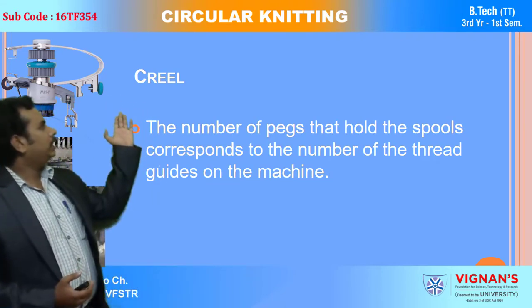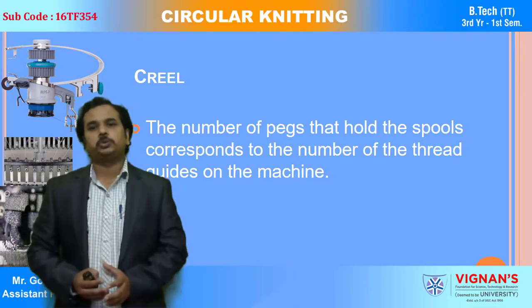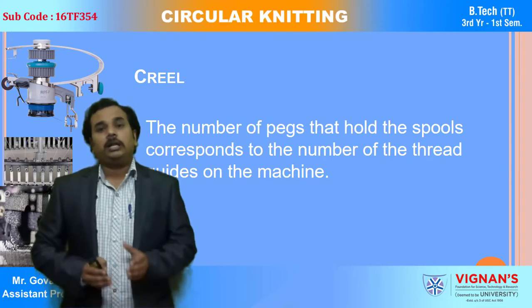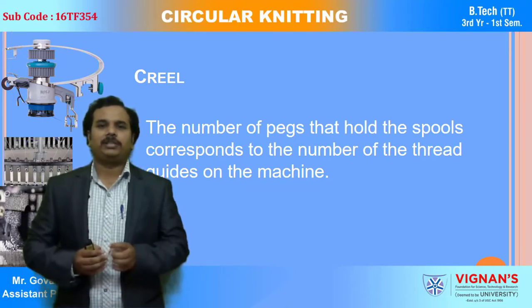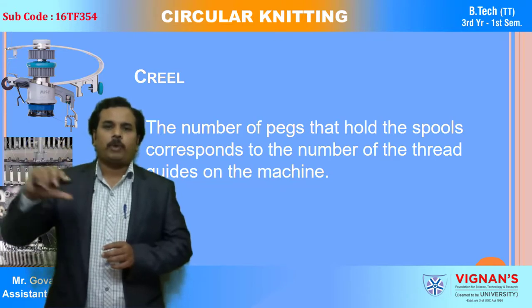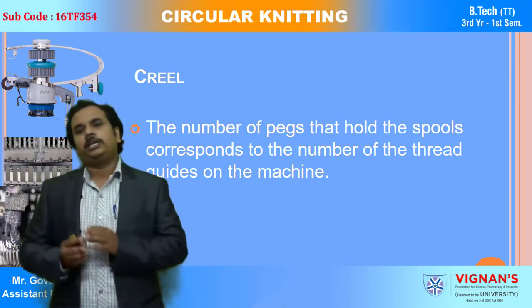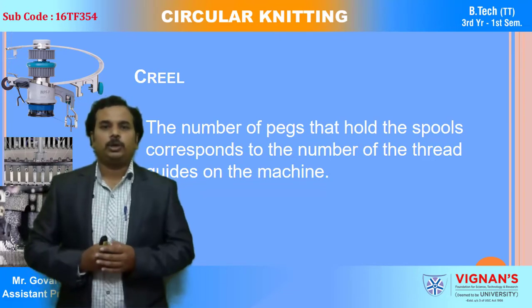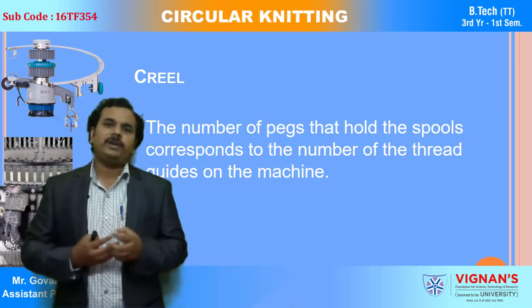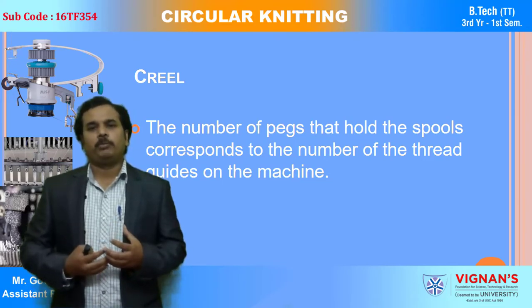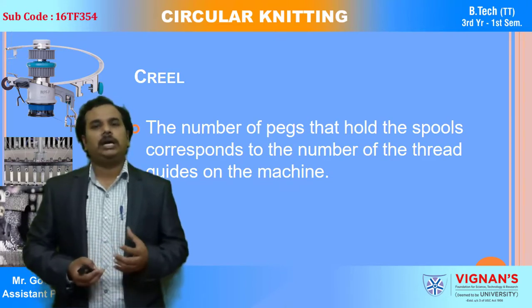Here you can see the creel. The creel is nothing but the number of pegs that hold the spools, corresponding to the number of thread guides on the machine. In simple terms, the creel is a metallic stand having pegs. On the pegs, we can mount the packages, and these packages are going to feed the yarn into the knitting elements. Generally, these pegs are like stationary creels, and on every peg, one package is mounted.